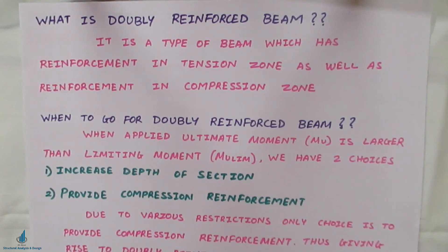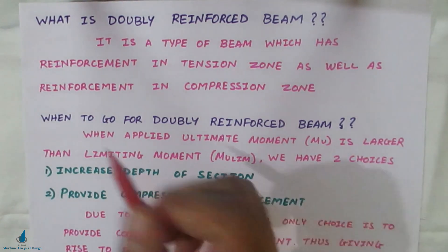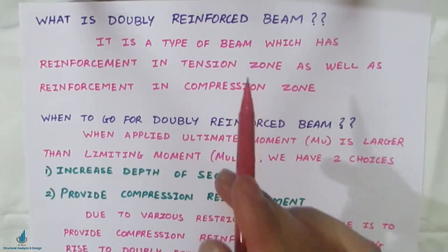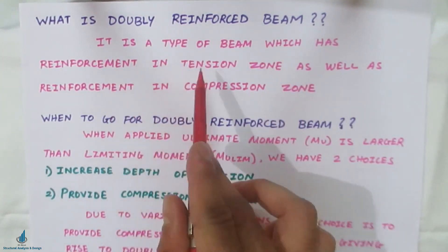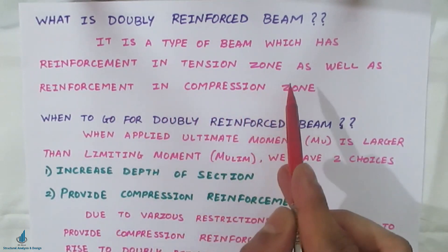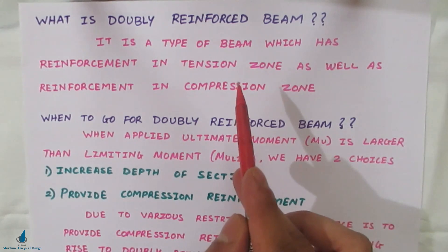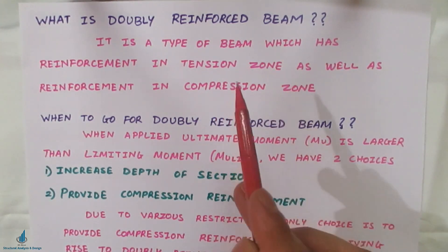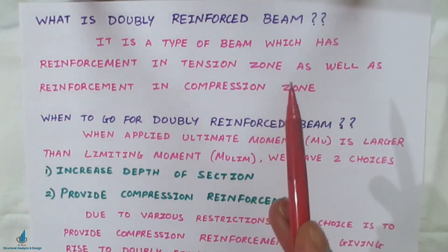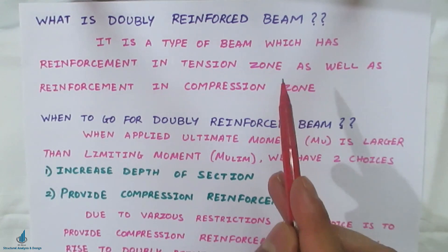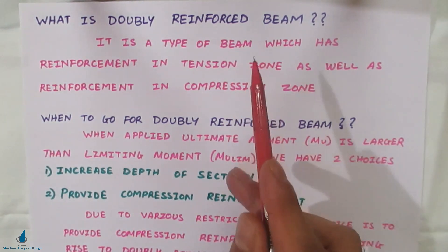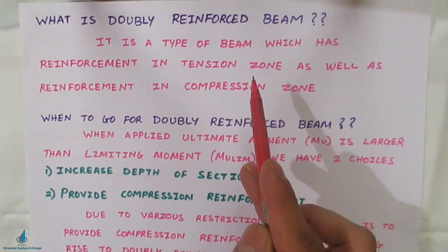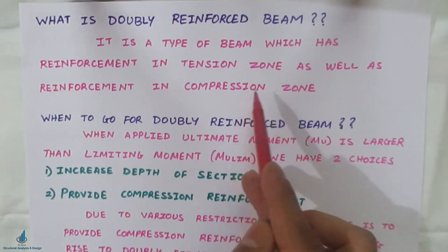Welcome back to All About Structural Analysis and Design. In this video we shall see what is meant by a doubly reinforced beam. A doubly reinforced beam is a type of beam which has reinforcement in the tension zone as well as in the compression zone. In a singly reinforced beam, steel is placed only in the tension zone because concrete is weak in tension and good in compression, but in a doubly reinforced beam, reinforcement is placed in both zones.